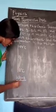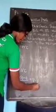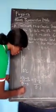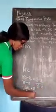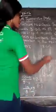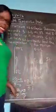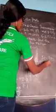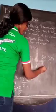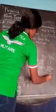Using the same method: (100 − 0) / (θ − 0) = (8 − 3) / (6 − 3). So 100 / θ = 5 / 3. Cross-multiplying: 5θ = 300. Therefore θ = 300 / 5 = 60 degrees Celsius.